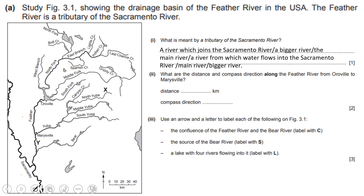What are the distance and compass direction along the Feather River from Oroville to Marysville? You just look for those two points along the Feather River. This is the Feather River here — this is Oroville and this is Marysville. Get your thread, trace the two points, then use your scale to find the distance between those two points in kilometers.